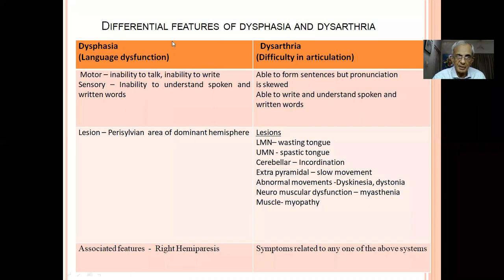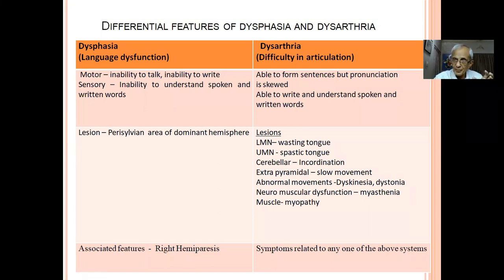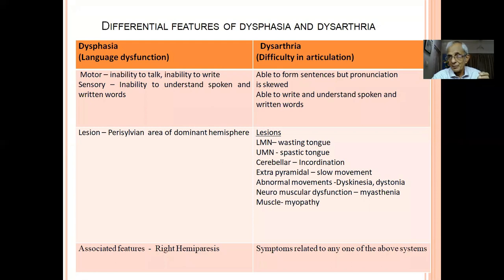A table differentiates dysphasia from dysarthria. In dysphasia, inability to talk and inability to write are motor features; inability to understand spoken and written words are sensory features. There is usually an associated right hemiparesis. In clinical practice, language problem with hemiparesis makes the diagnosis obvious. The challenge is identifying language defect without hemiparesis — that is where clinical skill is needed. In dysarthria, the patient is able to form all sentences, but pronunciation is impaired. Understanding spoken and written words is preserved. Various neurological conditions cause dysarthria with associated clinical features that help localize the lesion.